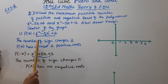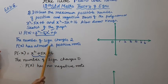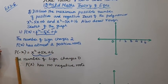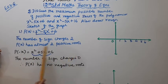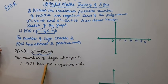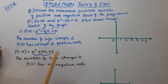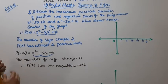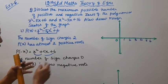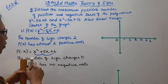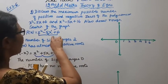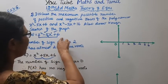Also draw a rough sketch of the graph. The number of sign changes for P(x) gives at most 2 positive roots. The number of sign changes for P(-x) is 0, so P(x) has no negative roots. Now here we have the graph for x² - 5x + 6.